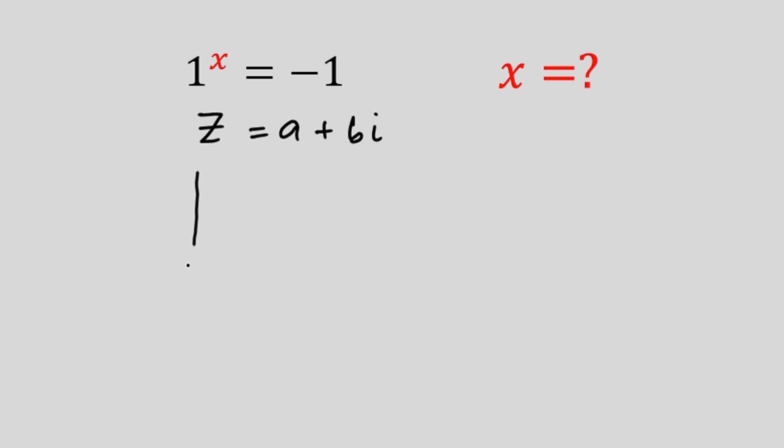On the Cartesian plane we can represent this quickly. Always on the horizontal axis we have the real part then on the vertical axis we have the imaginary part. Now let's say we have this point, let's call it z, then this point from the origin, let's call it a, then this point from the origin, let's call it b.